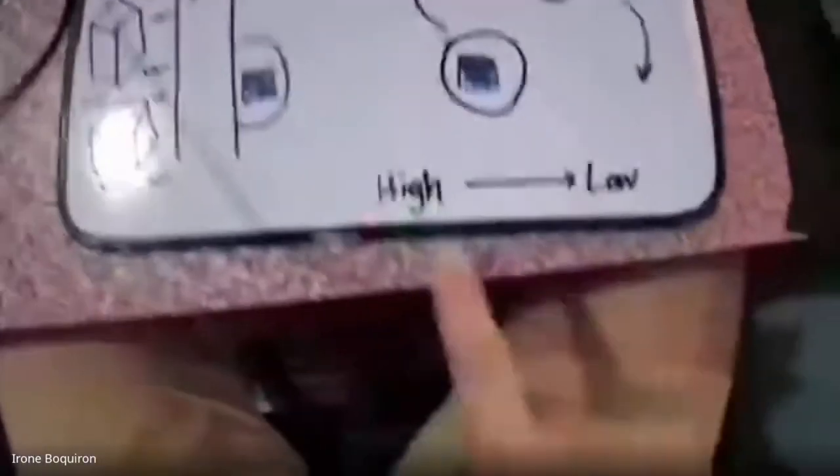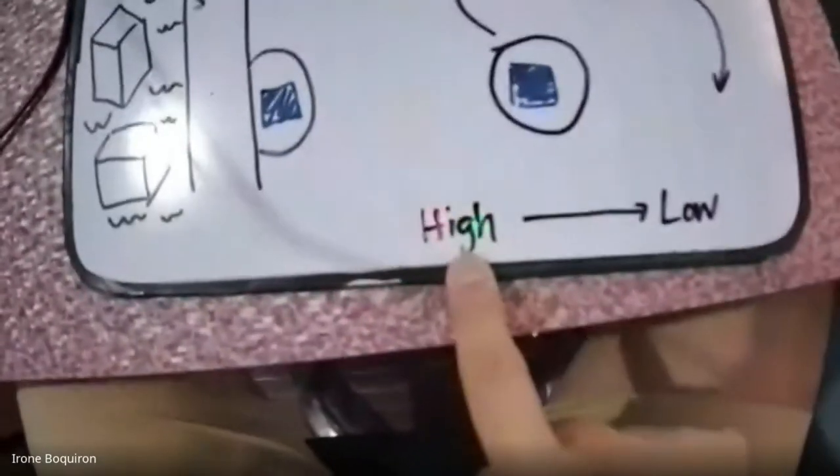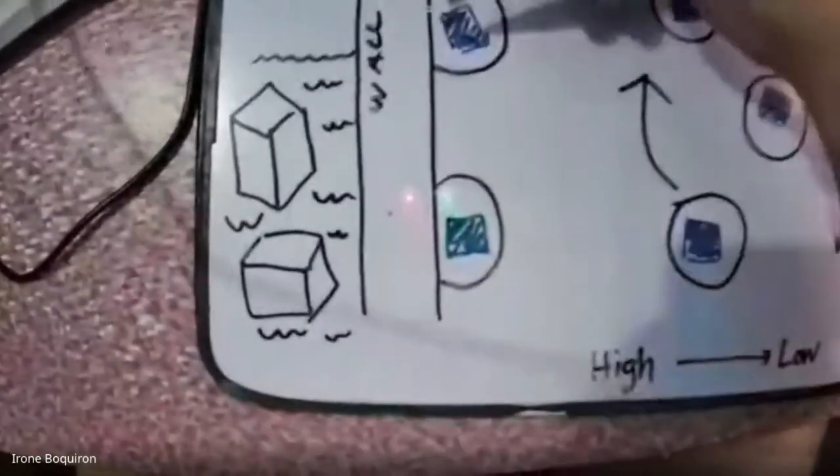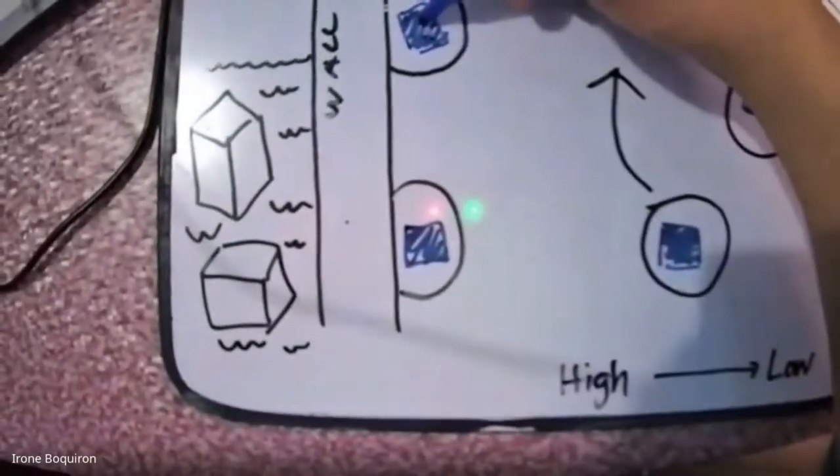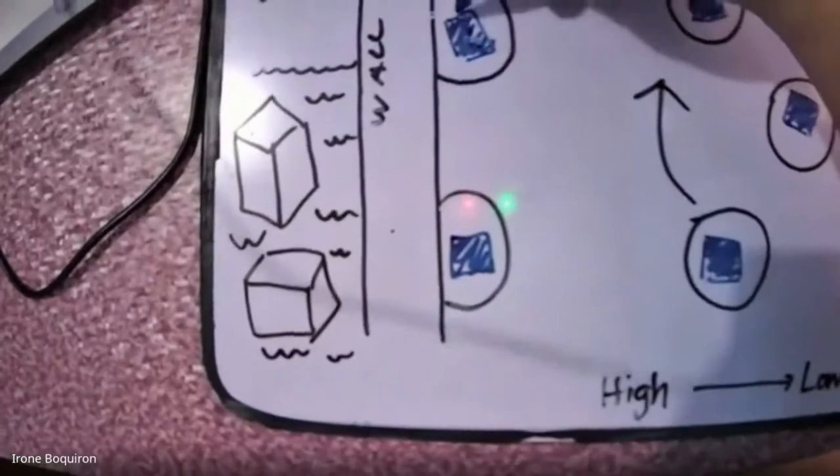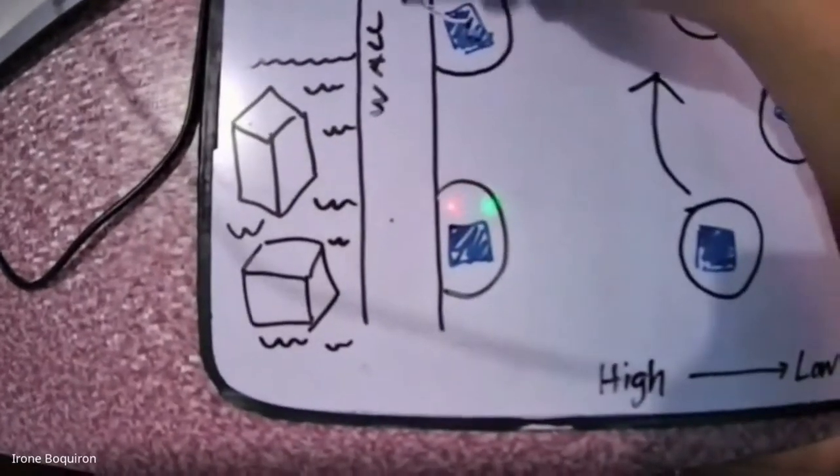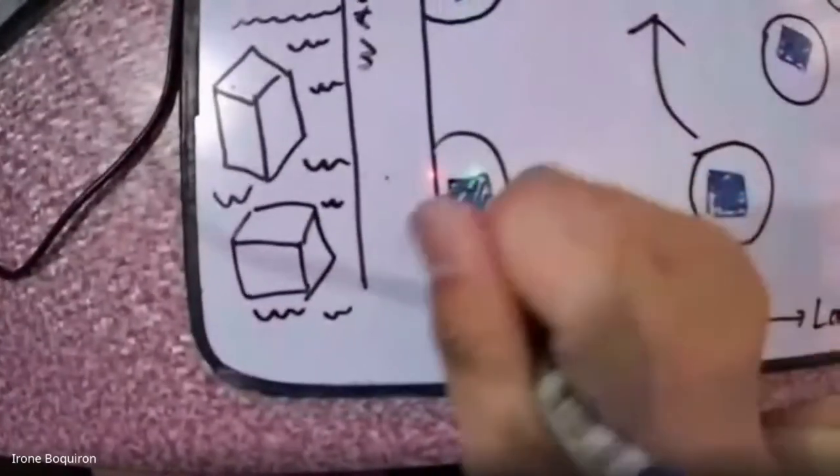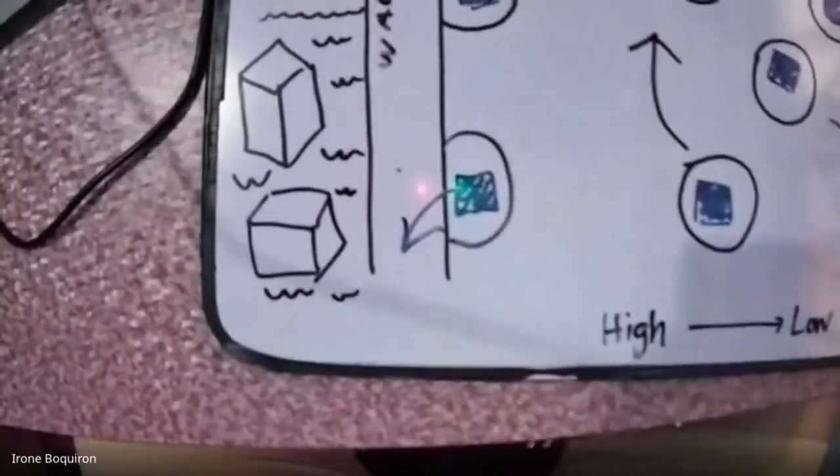Heat travels from high to low. So where will this heat now go? It will move from the water vapor particle into the wall of the glass.